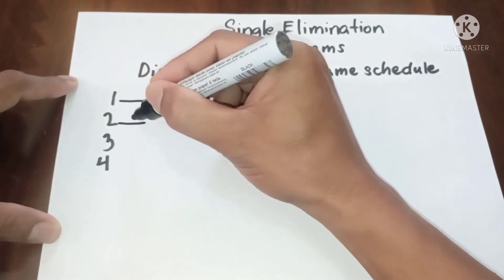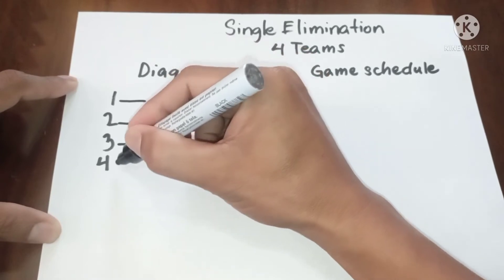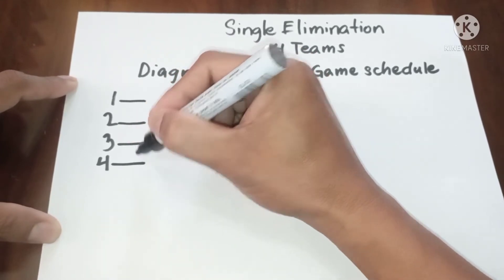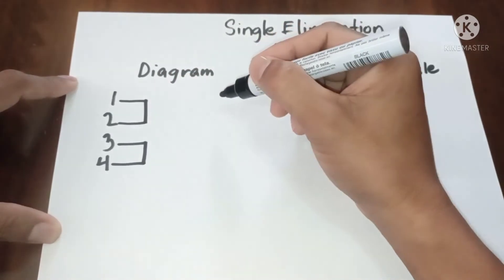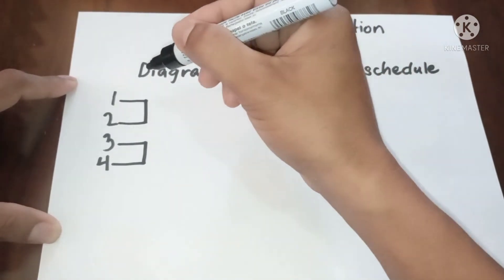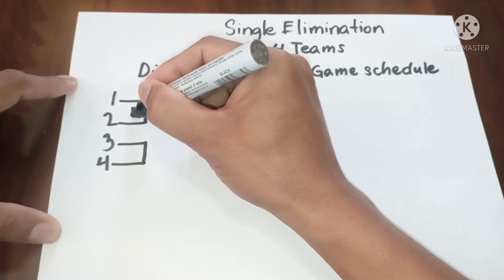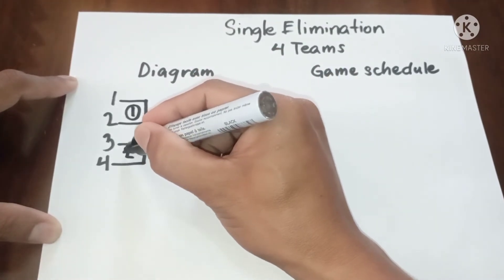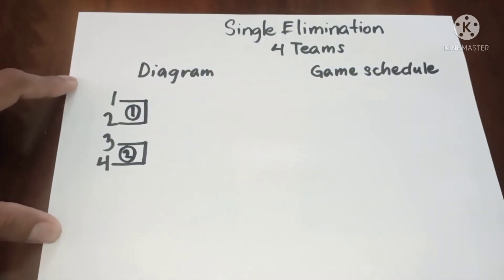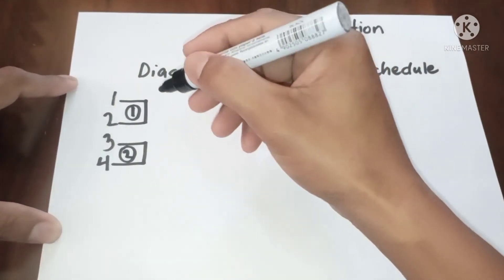Just draw the horizontal line equally from the top, then number of game from the top again. Game one, game two, then let's have the result.